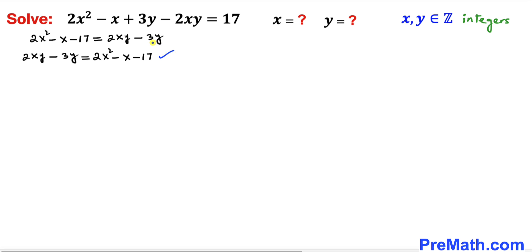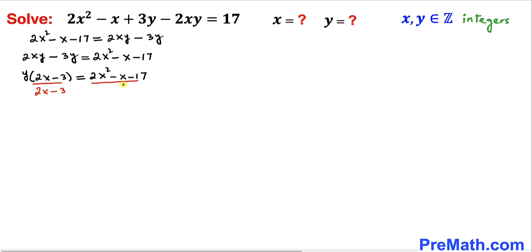I have flipped this equation around — it doesn't make any difference. On the left hand side we have y as common, so we can factor out y outside and we get y times (2x minus 3) equals 2x squared minus x minus 17. Now let's divide both sides by (2x minus 3), giving us y equals (2x squared minus x minus 17) divided by (2x minus 3).